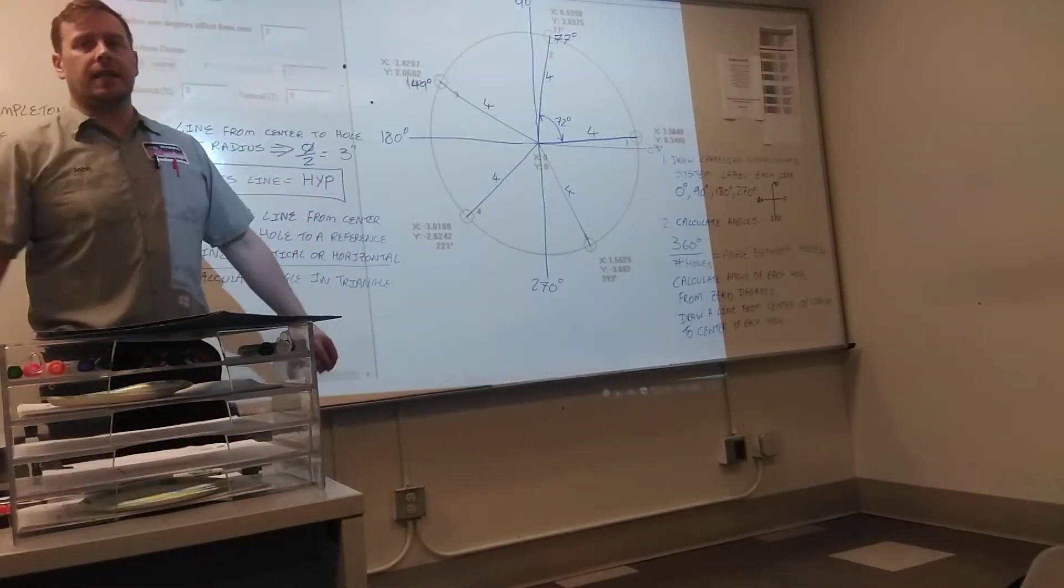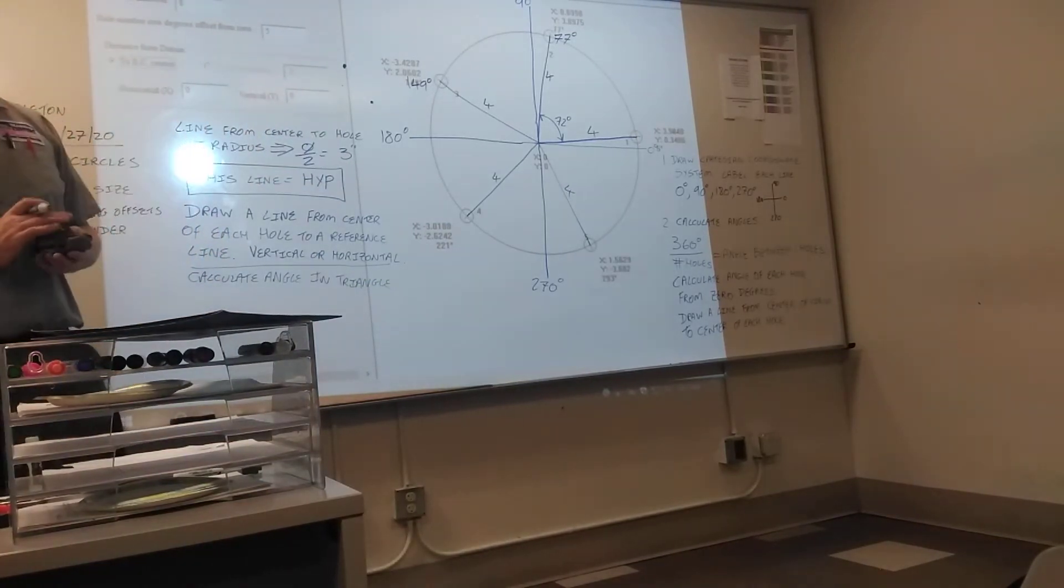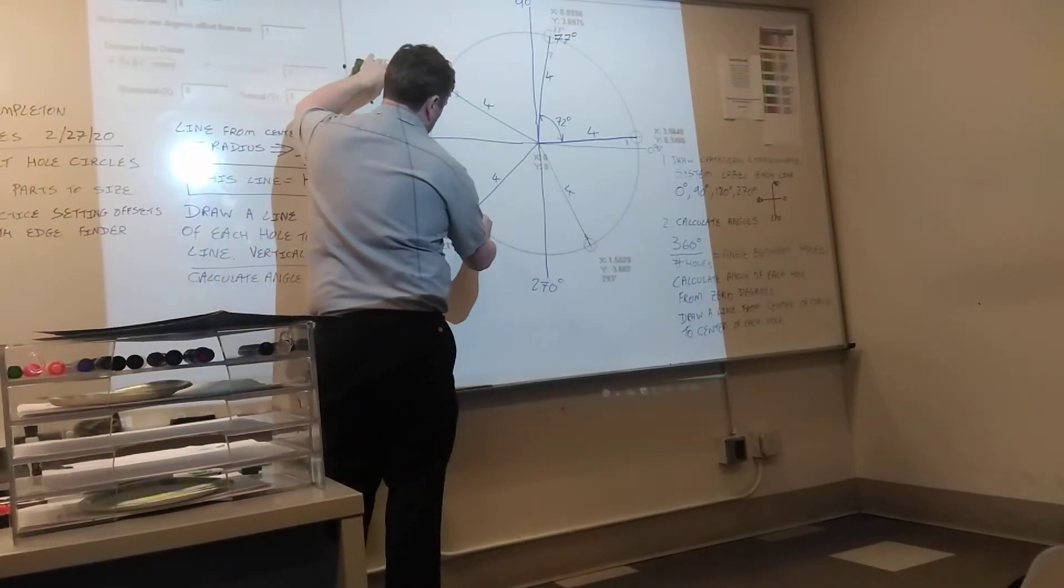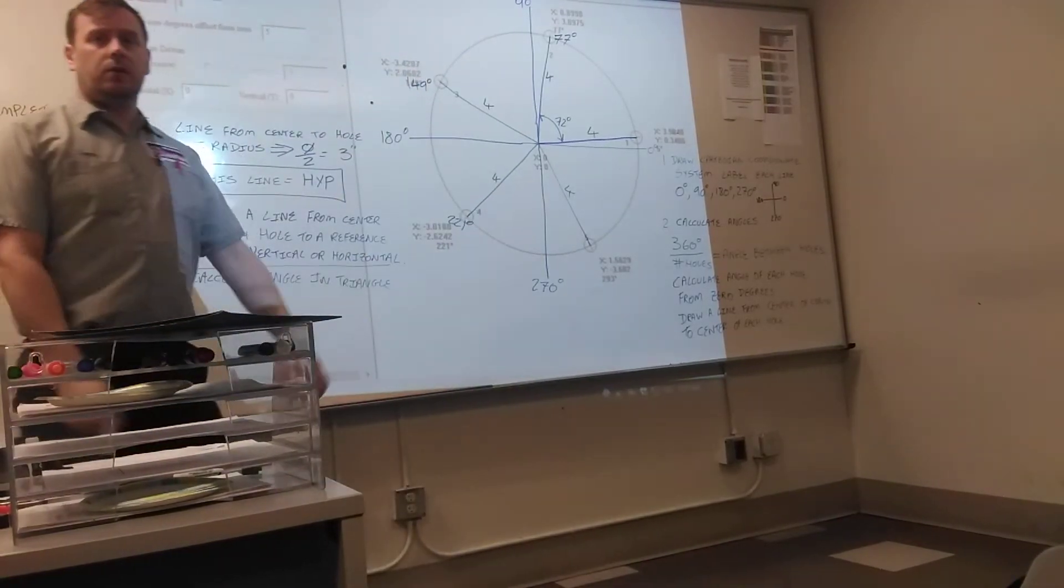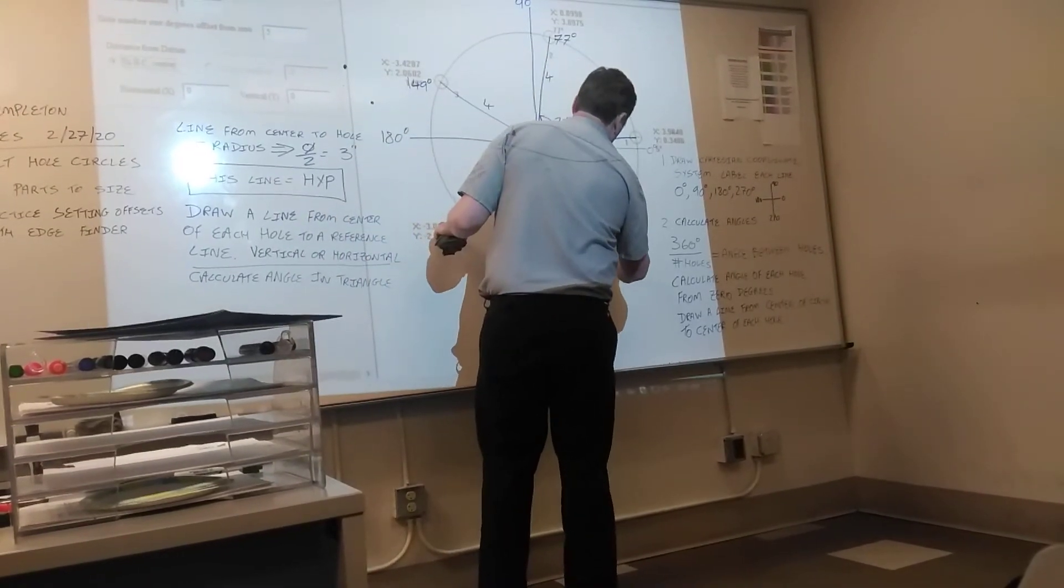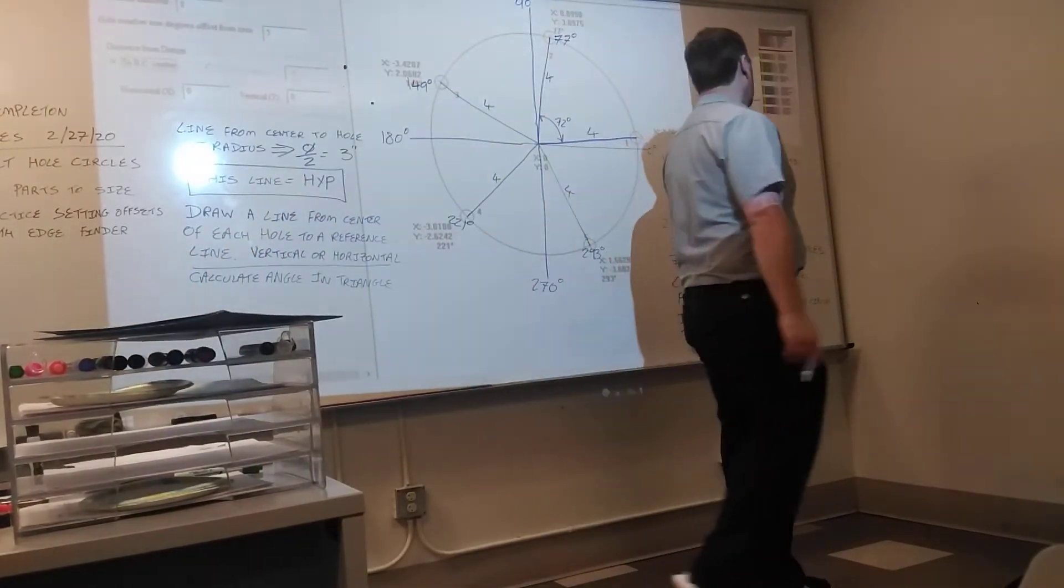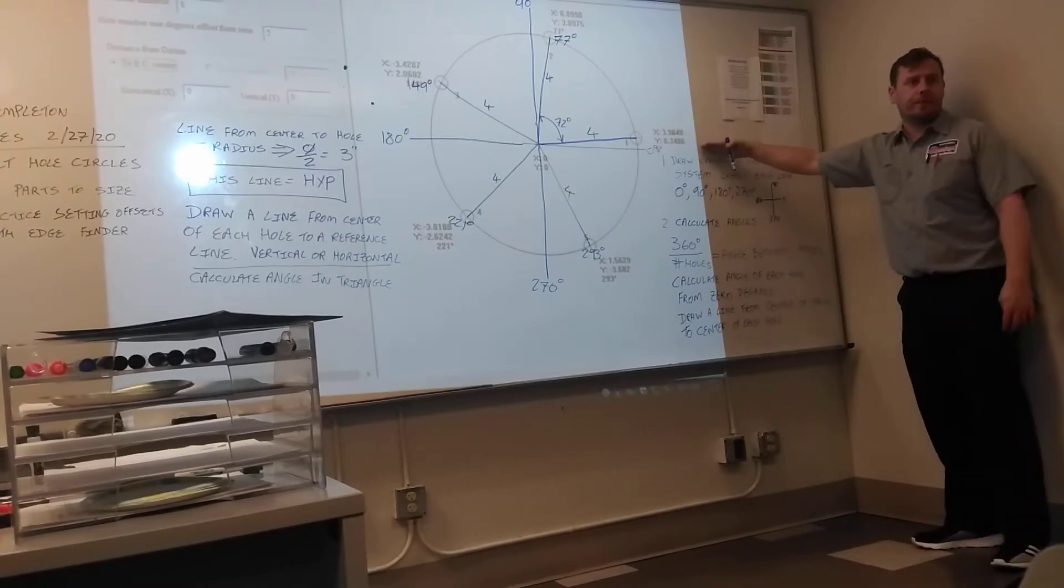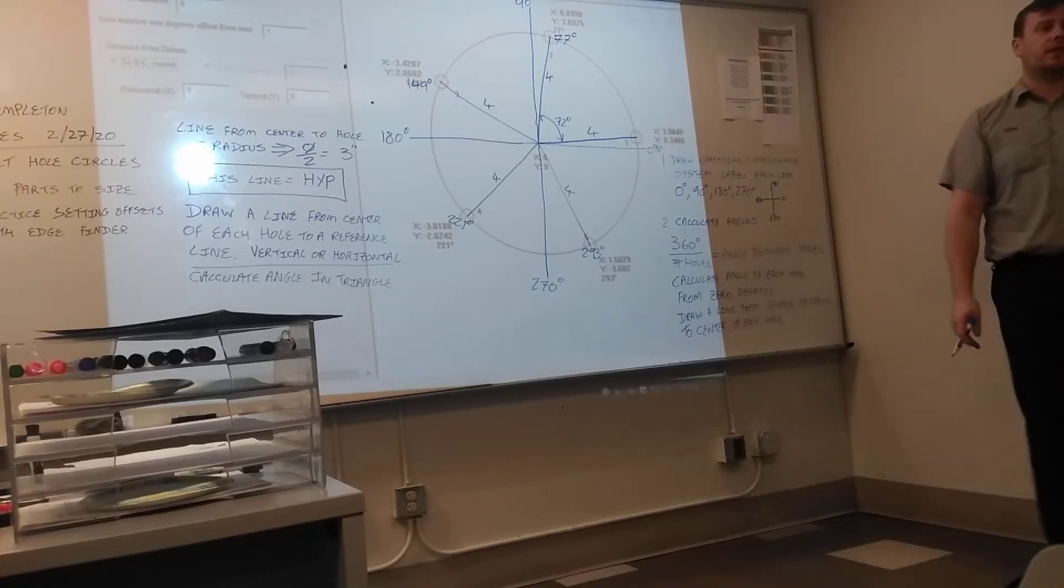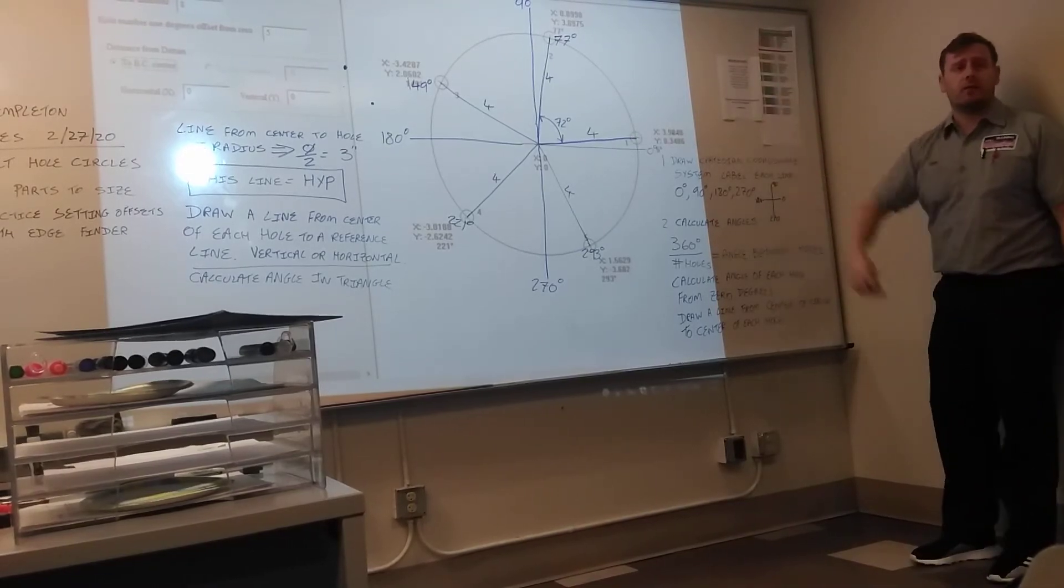And we're basically just adding 72 to each hole as you go around. Because each hole is 72 degrees from each other. So 149 plus 72, which is 221, plus 72 again, and you've got 293. So draw your Cartesian coordinate system, label the reference lines, calculate the angle, 360 divided by 5, and then calculate how far each hole is from zero.